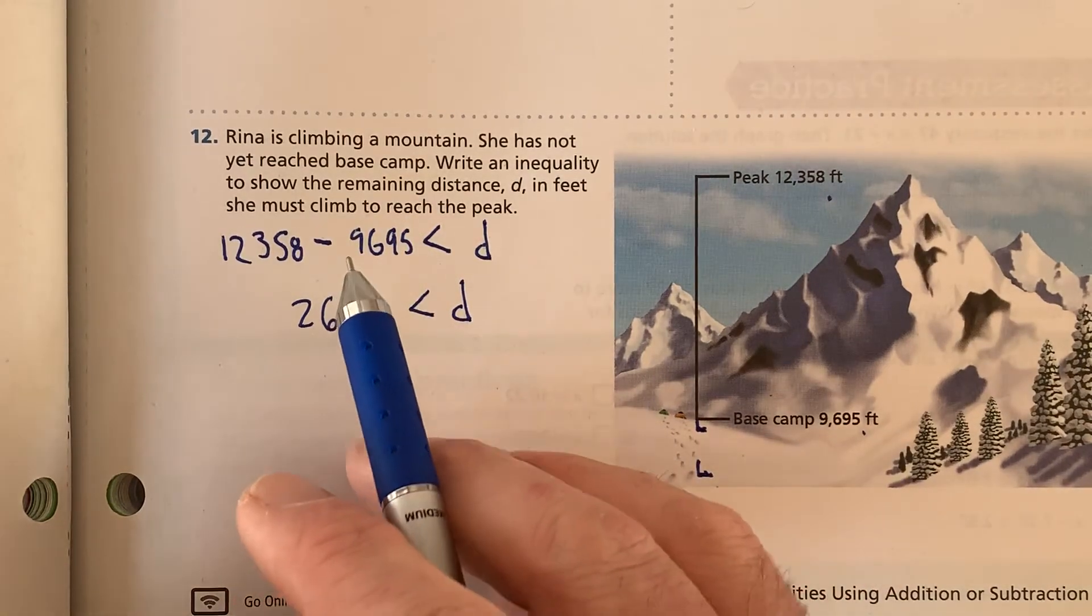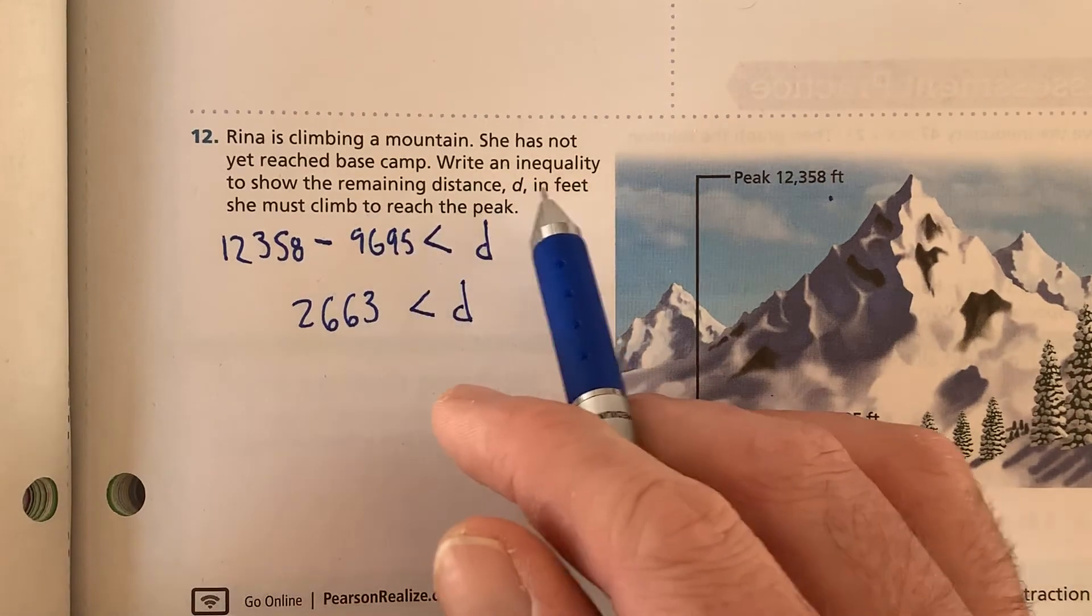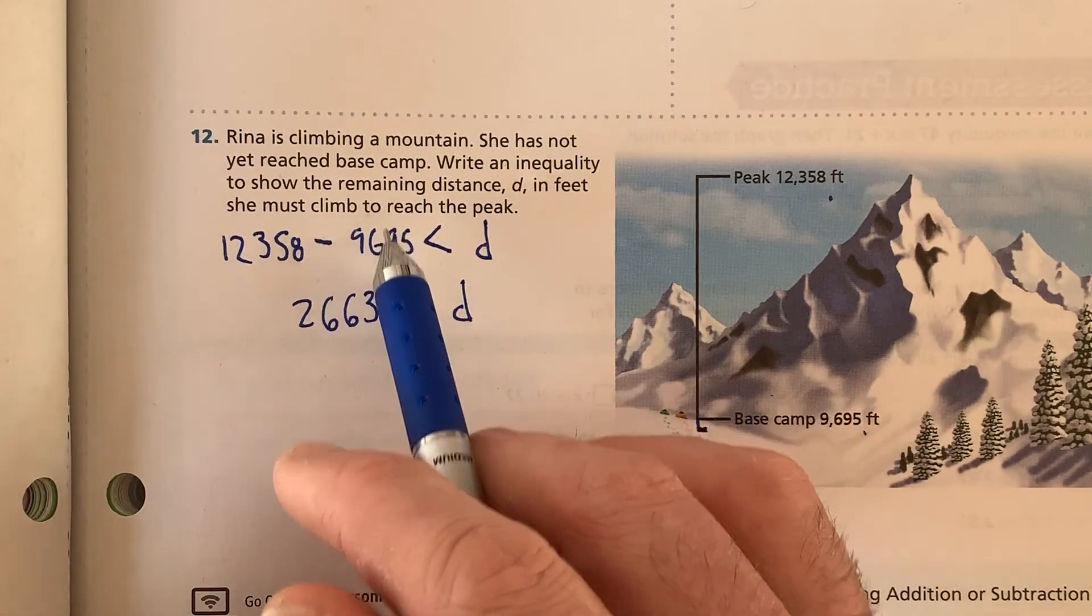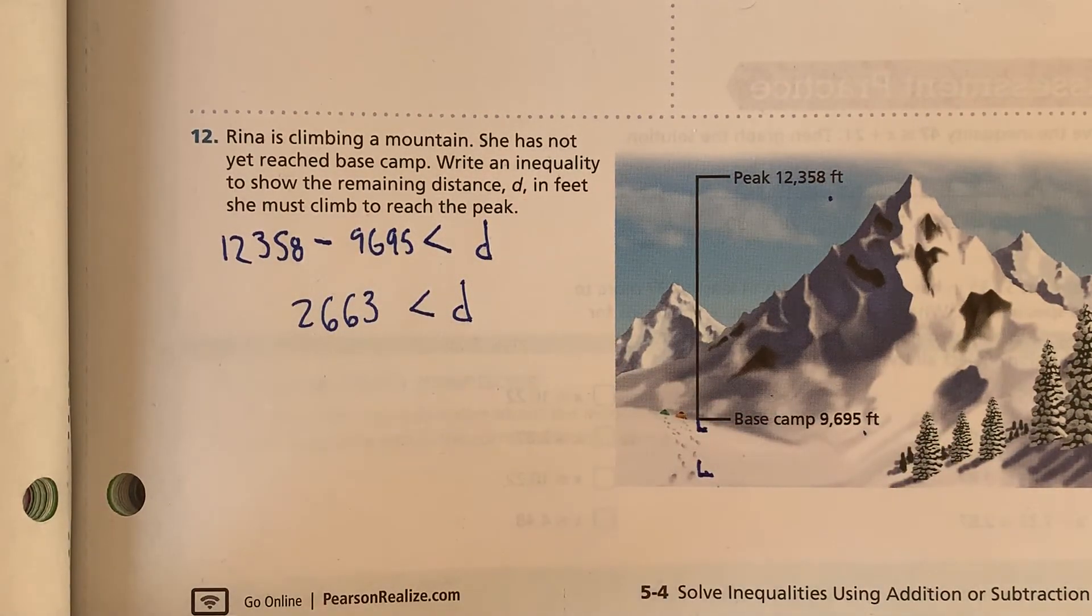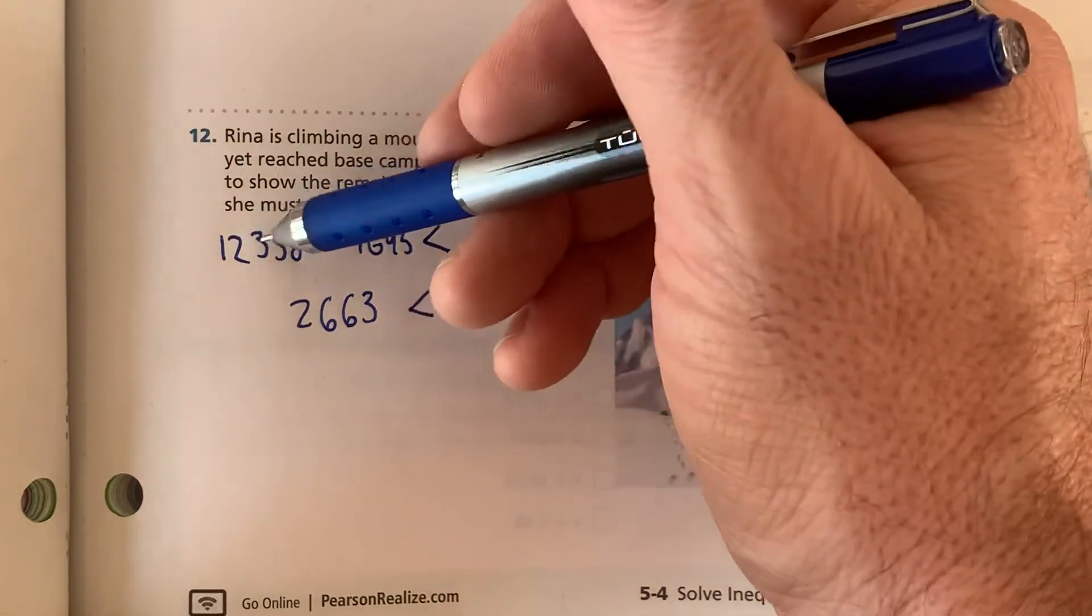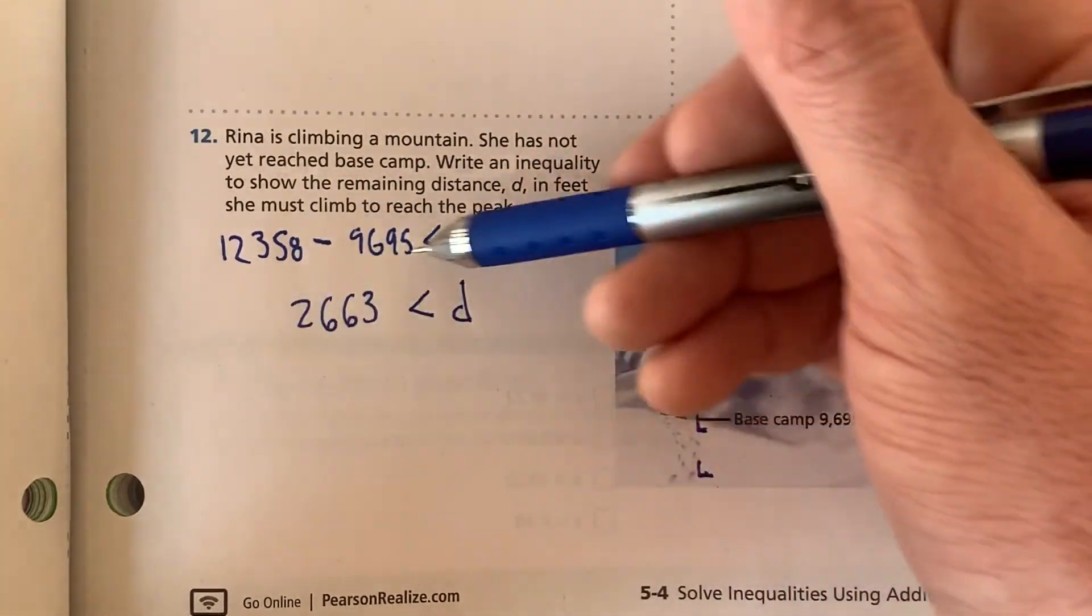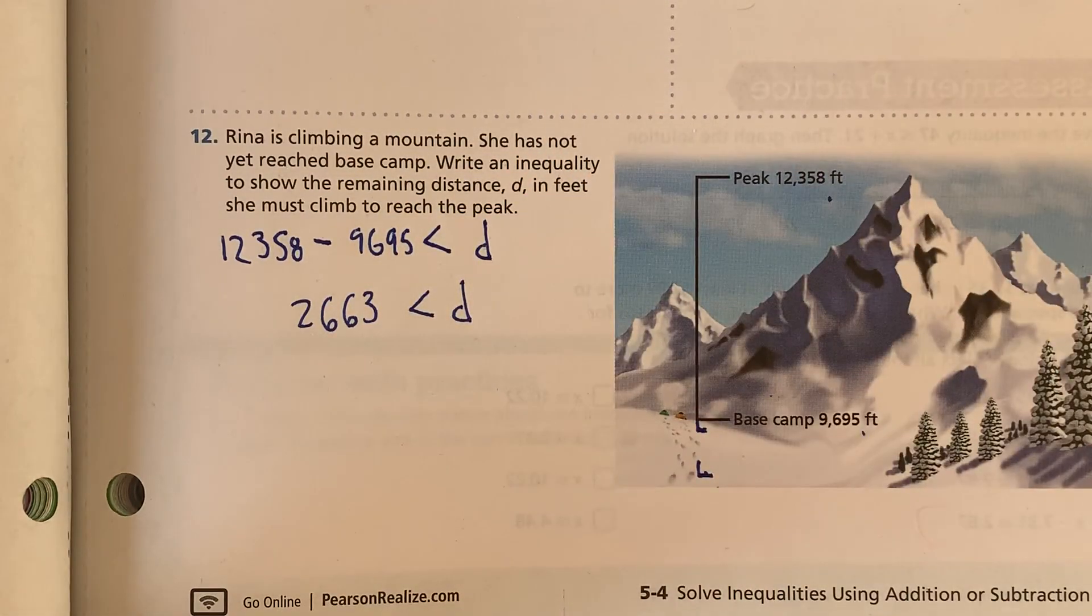So I guess the key thing here is remaining distance in feet she must climb to reach the peak. We need to show the bare minimum. So we have to show a term that is greater than that. So if you set it up and wrote it as this inequality, that is correct. And if you want to take another step, this inequality will be a good way to write it as well.